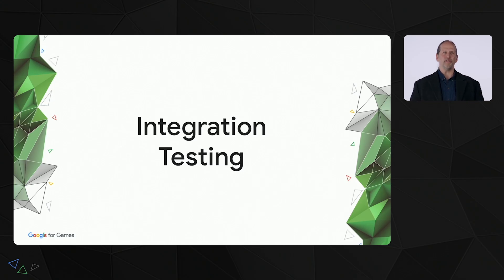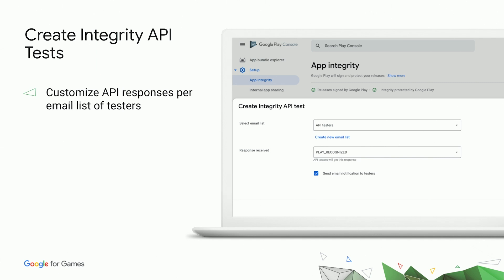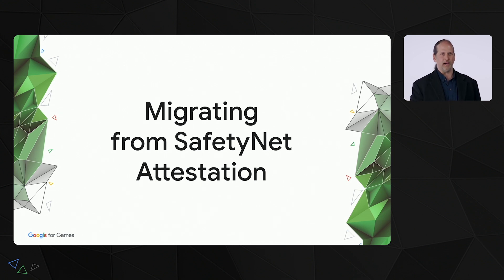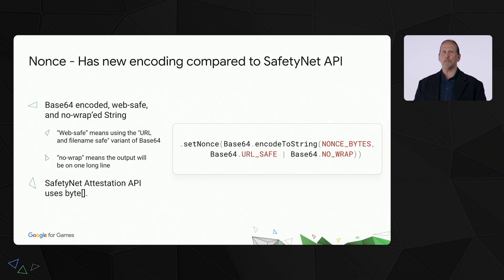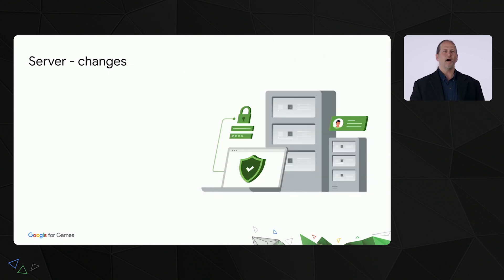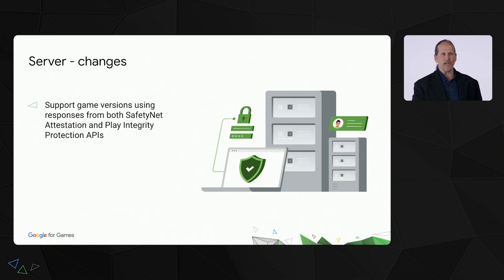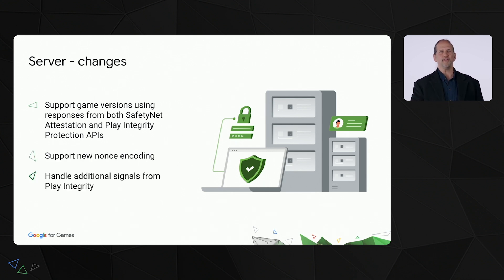We provide the ability to do end-to-end testing with the Google Play Console. You can make sure that testers within a specific email list get a specific return value from the API, allowing you to make sure you've tested all of the response pathways within your client and server end-to-end. If you've used the SafetyNet Attestation API, the implementation is very similar. One big difference is in the encoding of the nonce — SafetyNet Attestation allows you to use a byte array, while the Play Integrity API requires a Base64 encoded web-safe no-wrap string for the nonce. On your server, you'll want to add code to support both the SafetyNet Attestation API as well as the Play Integrity API, the new nonce encoding, and handlers for any additional integrity signals.